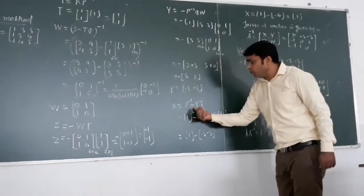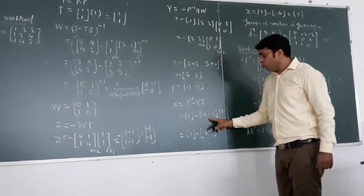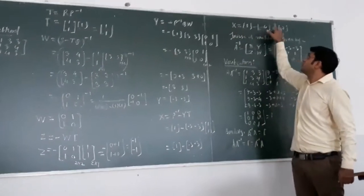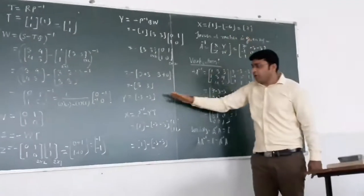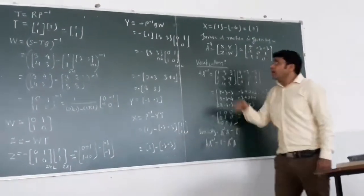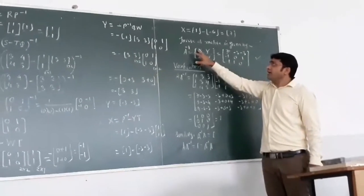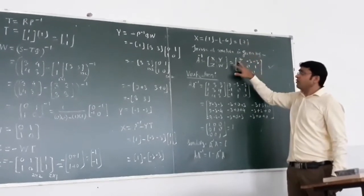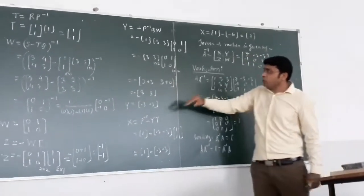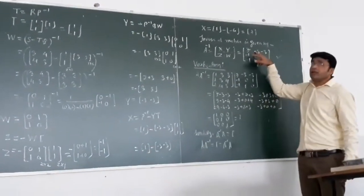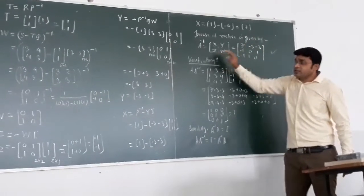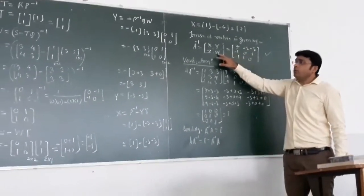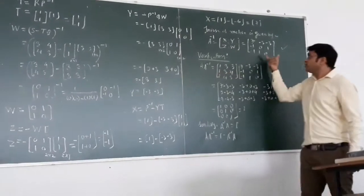X has the formula P inverse minus Y times T. Putting in the values and taking the multiplication, then subtracting, we get X as a scalar value of 7 of order 1 by 1. Now assembling the inverse using the x, y, z, w formula: X = 7, Y = [−3, −3] as a row matrix, Z = [−1, −1] as a column matrix, and W = [0, 1; 1, 0] as a 2 by 2 matrix.